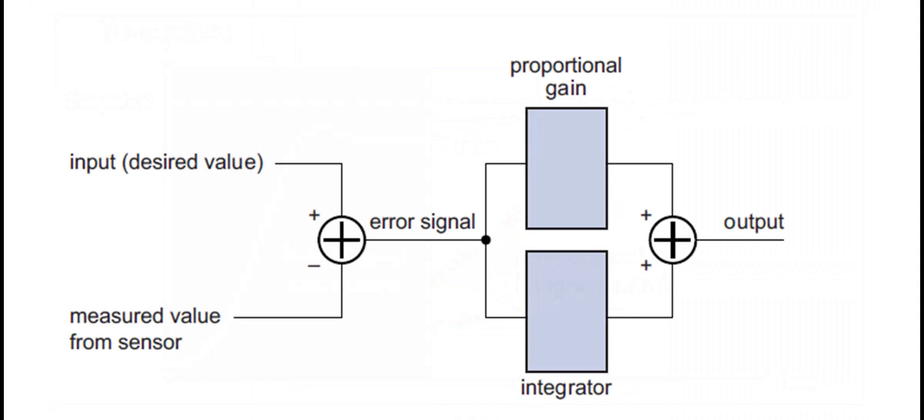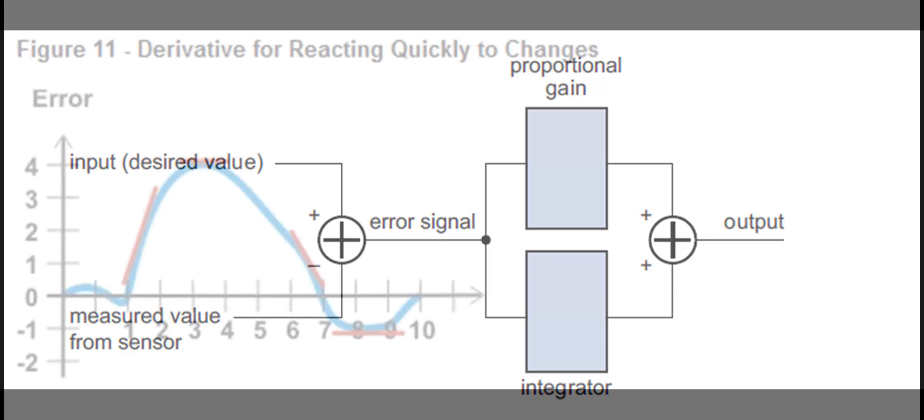This figure shows a controller that combines the proportional and integral control, also known as a PI controller. The integral function is performed by a simple op-amp circuit known as an integrator.